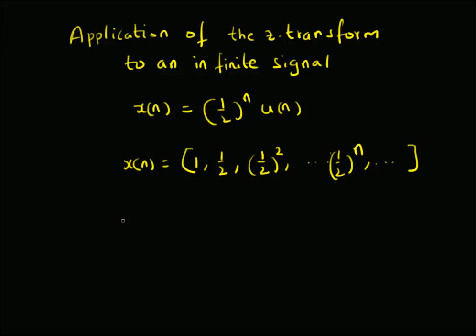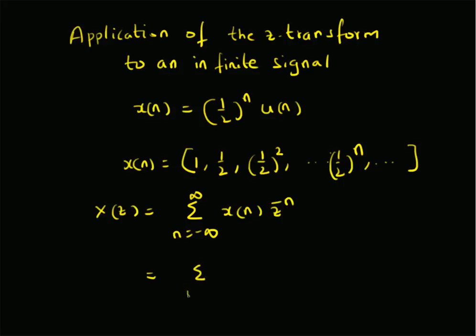So how do we apply the Z transform? The definition is X(z) = summation from n = −∞ to +∞ of x(n) * z^(−n). Now, since x(n) = (1/2)^n * u(n), where u(n) is the unit step sequence, it starts at n = 0. Therefore, we have the summation from n = 0 to ∞ of (1/2)^n * z^(−n).